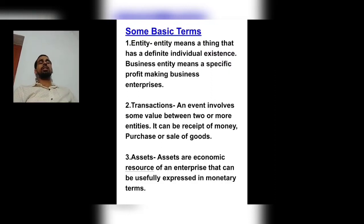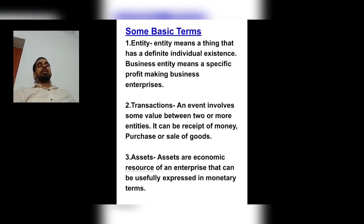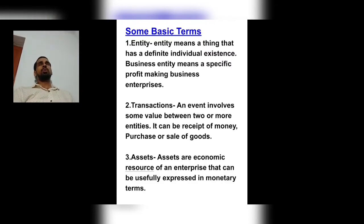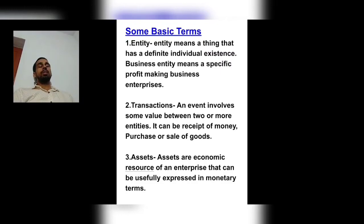Transaction is an event involving some value between two or more entities — when two people or two entities have a lane-den, that is a transaction. It can be receipt of money, purchase, or sale of goods. It can be of two types: credit transaction and cash transaction. The third basic term is assets (sampatti). Assets are economic resources of an enterprise that can be usefully expressed in monetary terms — an enterprise can present them in monetary value and use them in bad times when the company's condition is not good. Some assets also help in their daily work.